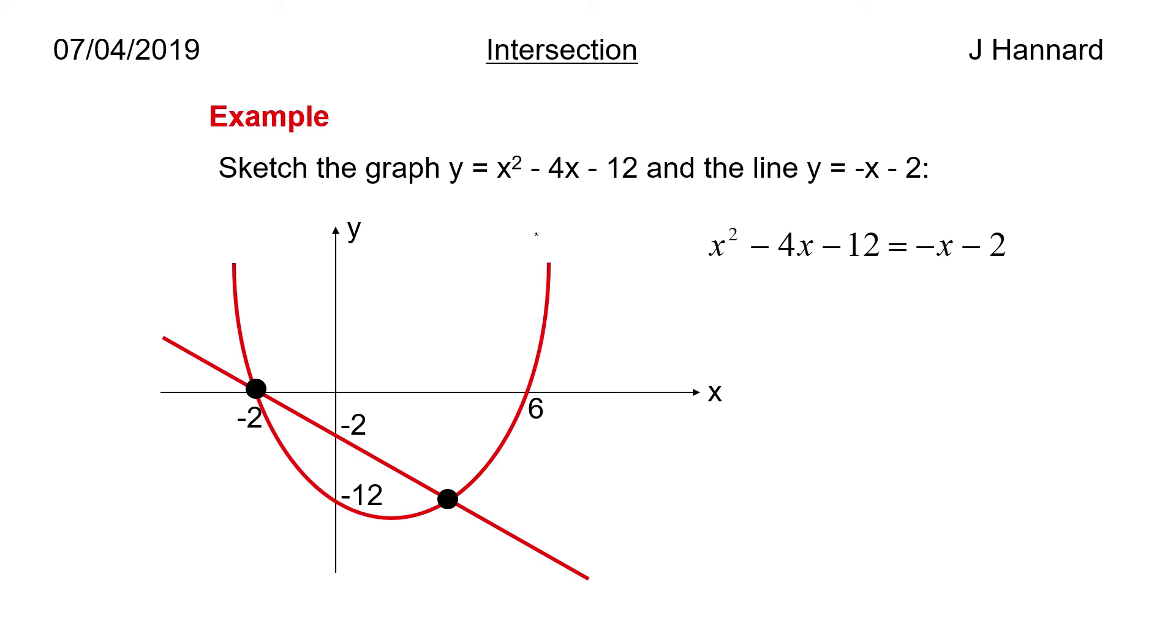We then want to find the points of intersection. So we know that y equals x squared minus 4x minus 12 and y equals minus x minus 2. So wherever we see a y, I've done x squared minus 4x minus 12. So we've got x squared minus 4x minus 12 is equal to minus x minus 2. Don't panic, just rearrange and we get that x squared minus 3x minus 10 is equal to 0. We then factorize that and we get x minus 5 times x plus 2 equals 0.